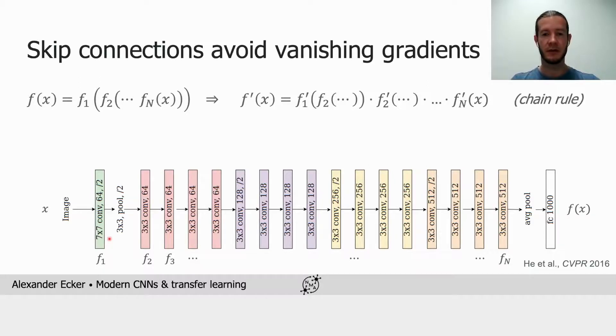The network is essentially a composition of many simpler functions, the individual convolutions. The final output f of x is f1 of f2, f of 3 of x, etc. If we take derivatives by applying the chain rule, we see that the derivative of f of x is composed of the product of the derivatives of the individual functions.